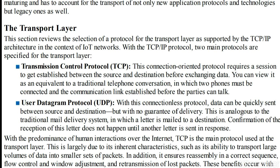TCP is always considered the main protocol because it has the ability to transport large volumes of data into smaller sets of packets, and it helps in assembly in correct sequence, flow control, and retransmission of lost packets. In contrast, UDP is most often used in DNS (Domain Name System), NTP (Network Time Protocol), SNMP, and DHCP.